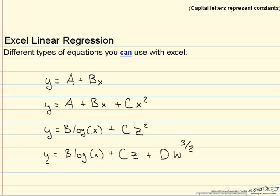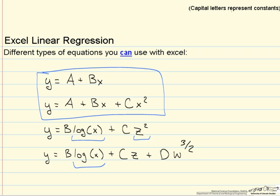Here you can see the original two equations from the previous page. These next two, however, are a little bit different. They still start with y equals, but instead of x and x², we have a log(x) and a z². We have a log(x), a z, and a w to the three halves.